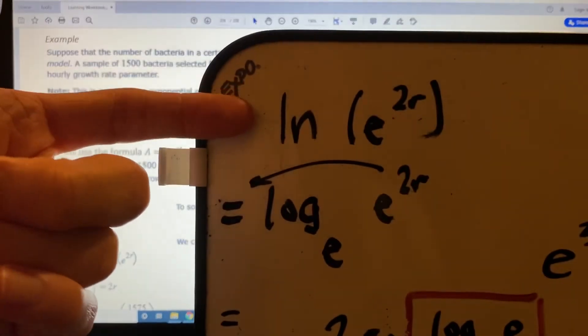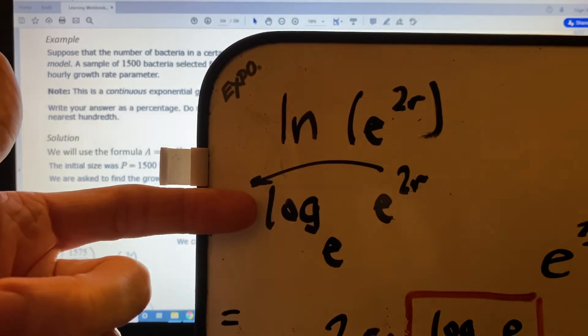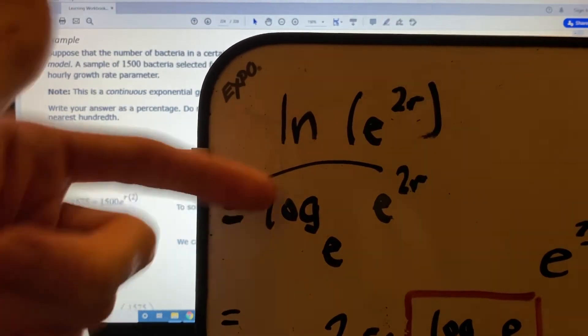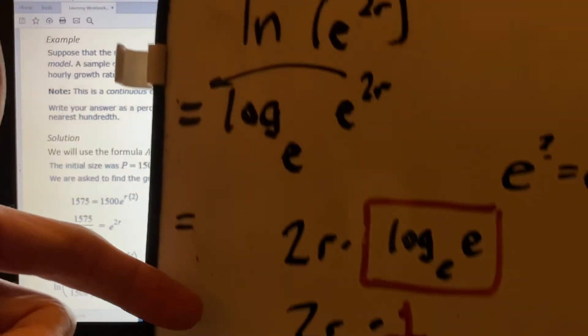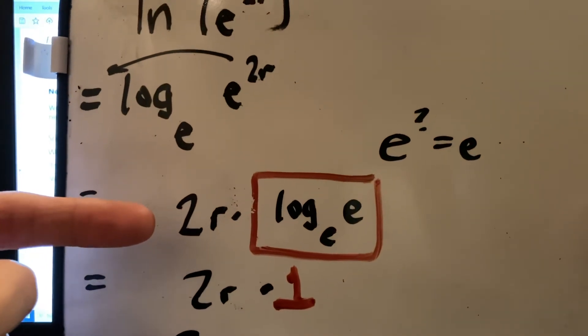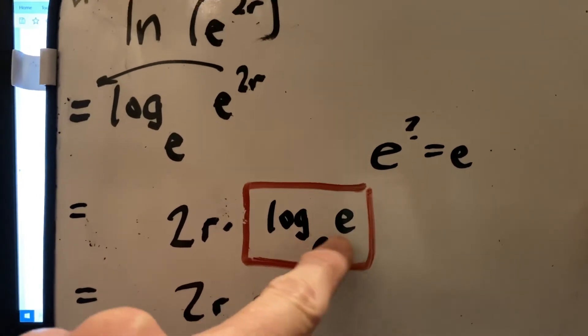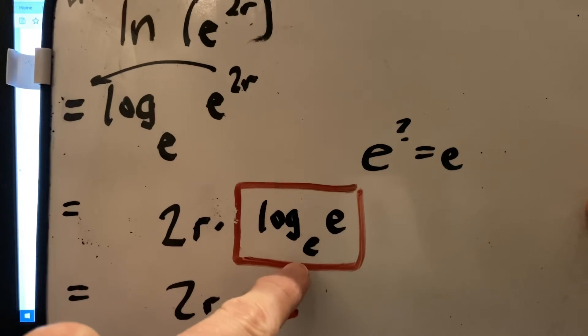Natural log of E to the 2R. Remember that natural log is the same as log base E. So then we have log base E of E to the 2R. Our argument has an exponent, so we can move that exponent to the front. Then we have 2R times log base E of E. Whenever you have a log whose base and argument are both numbers, you should check to see if that can be written in simpler form.